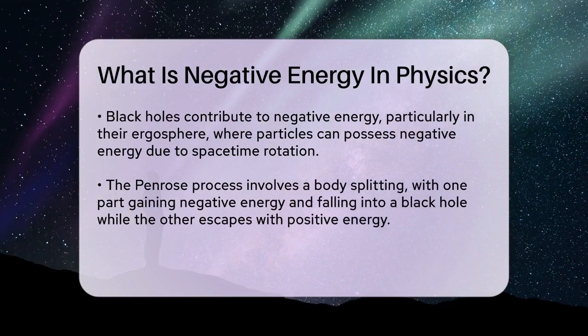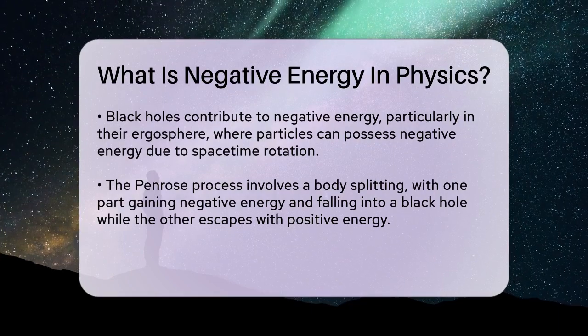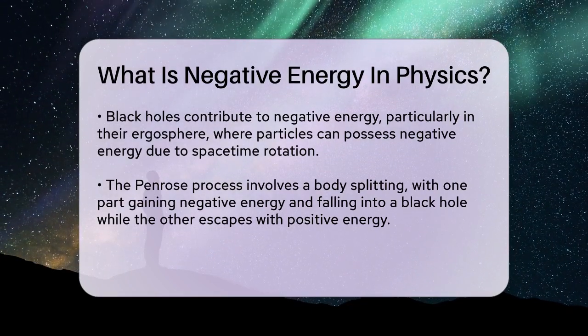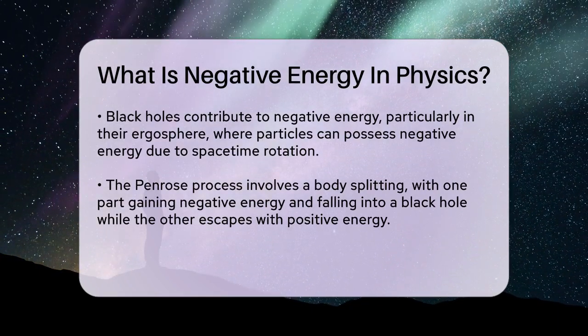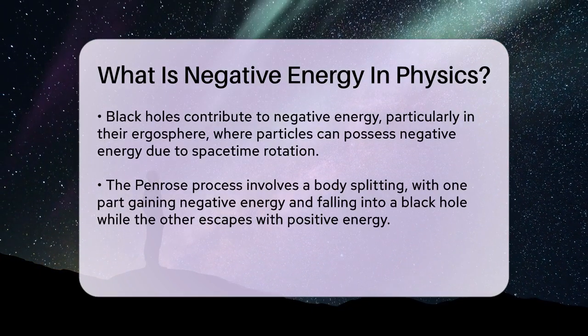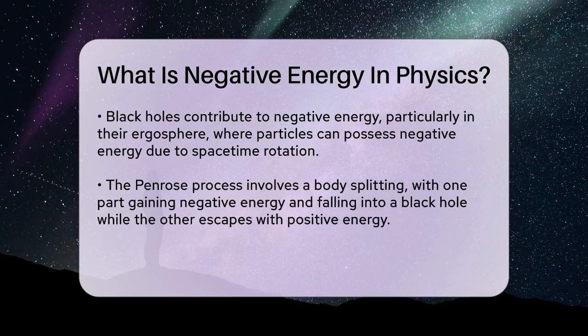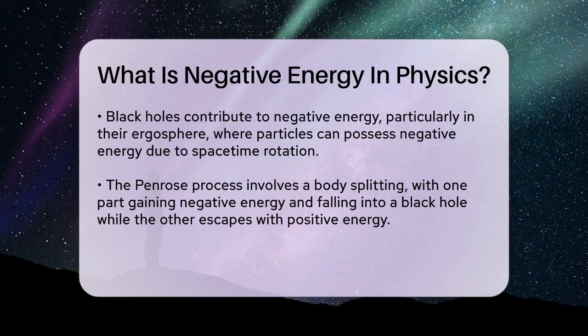The Penrose process involves a body splitting into two parts, with one part gaining negative energy and falling into the black hole, while the other part gains positive energy and escapes.